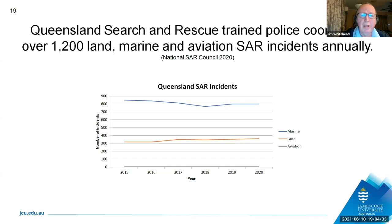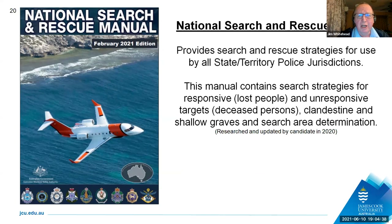All our searching information is contained within our national SAR manual, so we're actually really good at looking for responsive people — those who want to be found — and unresponsive people, those who have perished. That includes people who drown in water, suicidal people, and even sometimes clandestine graves that we come across. We have set rules for all of that, and they're all contained within the National Search and Rescue Manual.